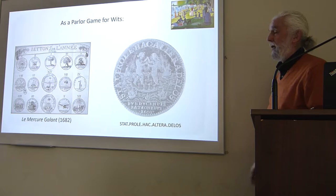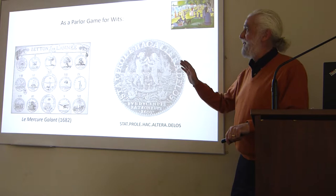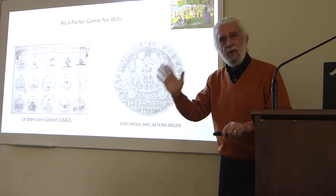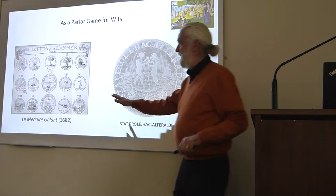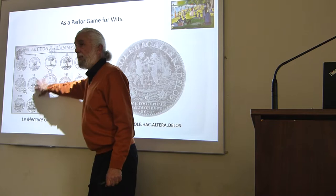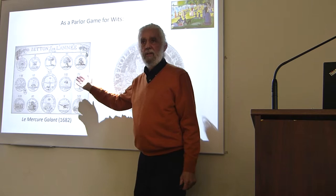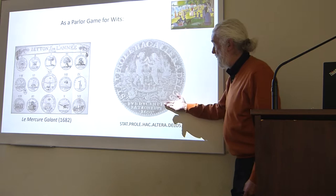Every year, these so-called administrative jetons — this thing called the Mercure Galant, basically the New Yorker of its day — would publish a copper plate engraving of all the new jetons for the year. The question became, what is going on here? Trying to unpack them became this parlor game. I've got one example I happen to know about; otherwise they're completely opaque.